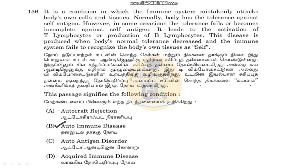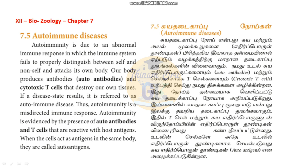If the immune system attacks our own normal cells, that is called autoimmune disease. Normally, our immune system can differentiate between our own cells and foreign particles like viruses or bacteria. In autoimmune disease, the immune system fails to recognize its own cells and attacks them as if they were foreign — that is why it is called autoimmune disease.